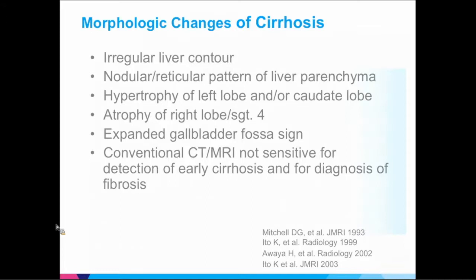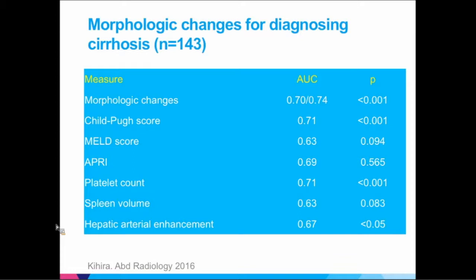We looked at about 140 cases with pathology and tried to just diagnose cirrhosis F4. Morphology didn't do so well — about 0.74 AUC for the best reader. Platelet count was 0.7, spleen volume 0.6, APRI 0.7. We really need better markers of cirrhosis and fibrosis.